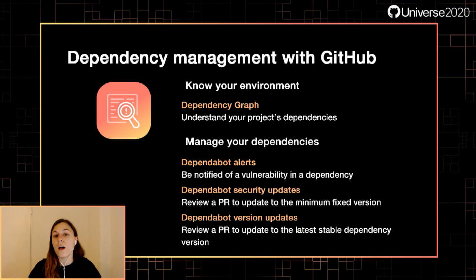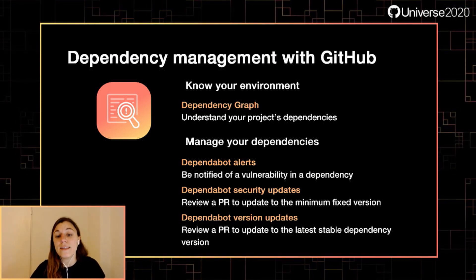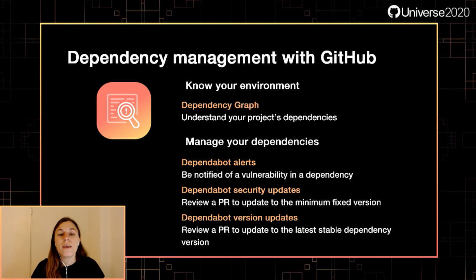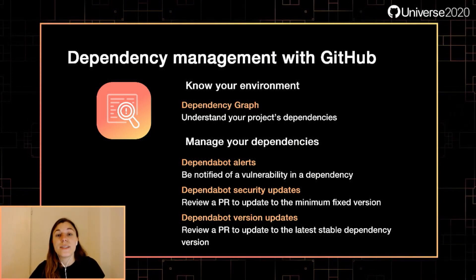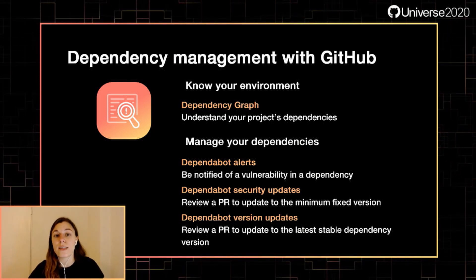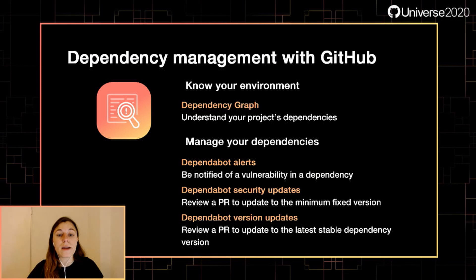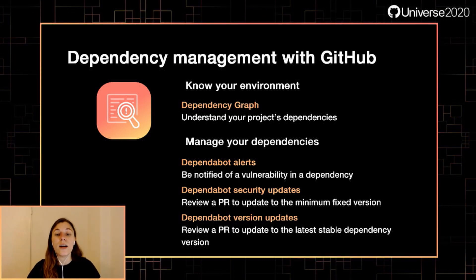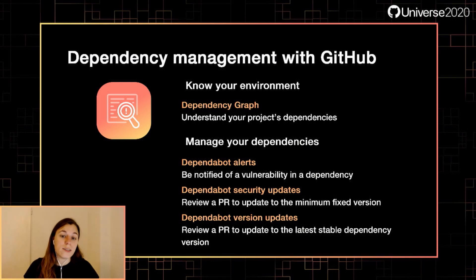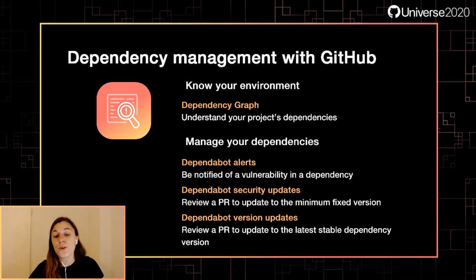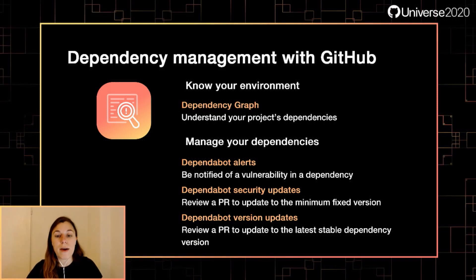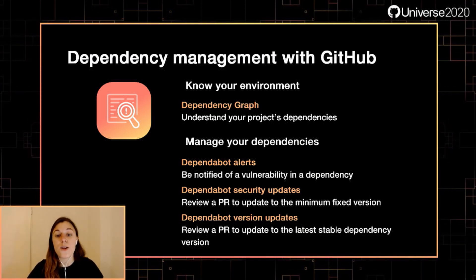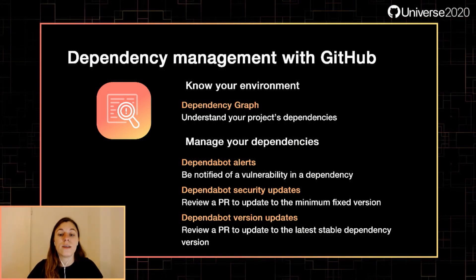Dependency Graph identifies all upstream dependencies and public downstream dependents of a repository or package, and items are automatically added to the dependency graph when you add a new dependency. To manage your dependencies, Dependabot alerts notify you of repositories affected by a newly discovered vulnerability. GitHub compares the information in the dependency graph to the information in GitHub's advisory database. A Dependabot alert can be sent when you add a new dependency or when a new vulnerability is discovered in an existing dependency. Dependabot security updates will send you a pull request to update a dependency to the minimum version that resolves a known vulnerability.